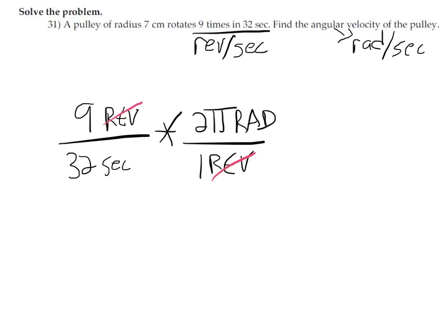The revolutions cancel. 9 times 2 is 18, the 2 goes into 32, so we get 9π over 16 radians per second.